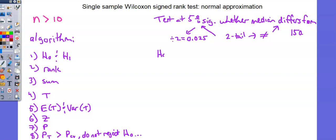I need to identify the null hypothesis and the alternative hypothesis. Null hypothesis is median is 150. Alternative hypothesis, median differs from 150. So now we've completed step 1. On the next slide, I've done my rank and my sum.